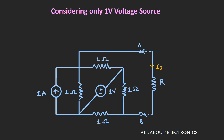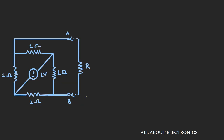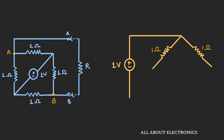Now let's consider only the 1V voltage source, with the current I2 flowing through resistor R. When only this voltage source is active, the current source is replaced by an open circuit. Redrawing the circuit: terminal A is at the positive terminal of the 1V source, where two 1-ohm resistors are connected. At the negative terminal, two more 1-ohm resistors connect to terminal B, with the 1-ohm resistor R connected across terminals A and B.